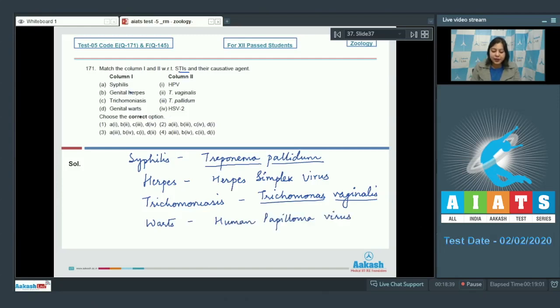So the correct matching is syphilis with Treponema pallidum that is A matches with 3. Genital herpes that is B matches with 4. Trichomoniasis that is C matches with 2 and genital warts that is D matches with 1. So the correct answer becomes option number 4. Proceeding to the next question.